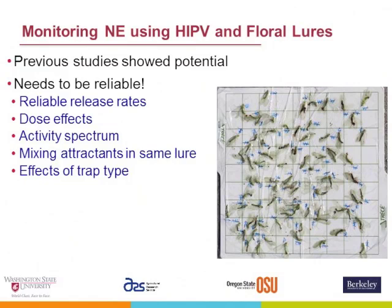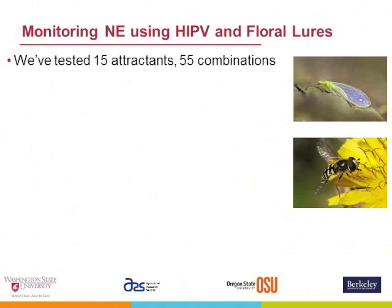We needed to have reliable release rates, dose effects, know the activity spectrum in terms of which natural enemies were attracted, notice the effects of mixing attractants in a lure, and the effects of trap type. Our grant actually solved most of these problems. We've done a lot of work on this, and in fact we've tested over 15 different attractants and 55 different combinations.